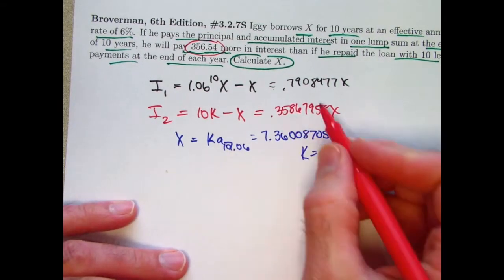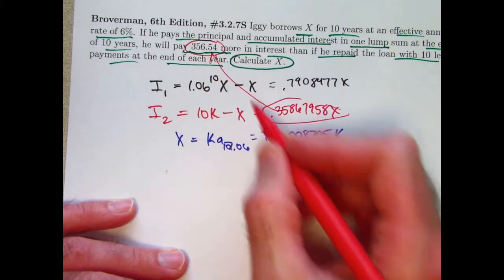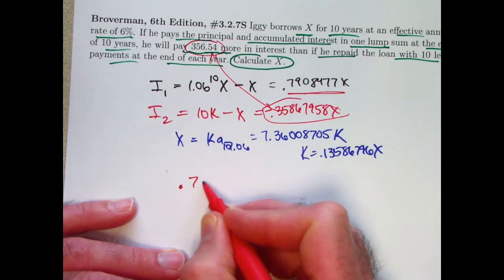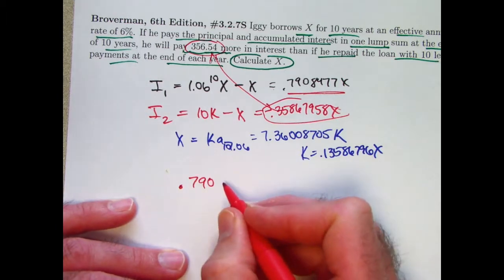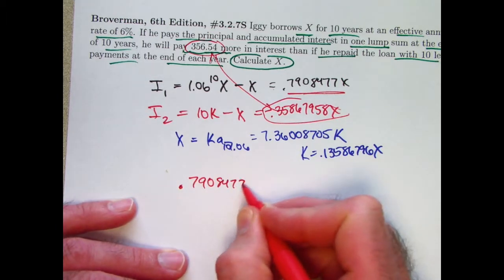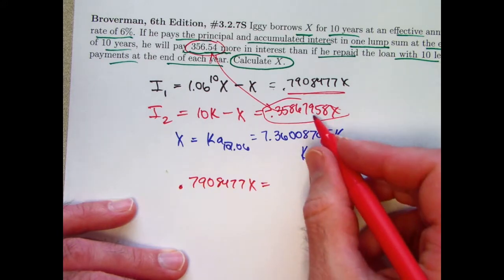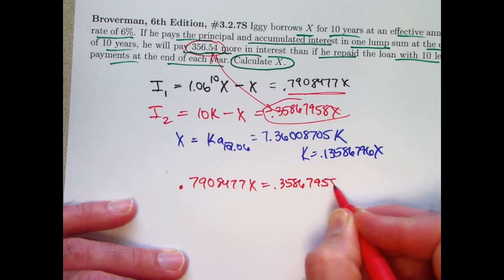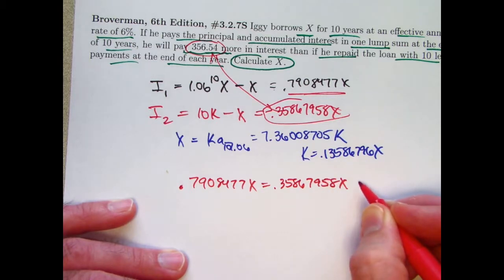I need to take this thing and add that to the 356.54 and then set it equal to this thing. So, my equation that I want to solve ultimately is 0.7908477X equals 0.35867958X plus 356.54.